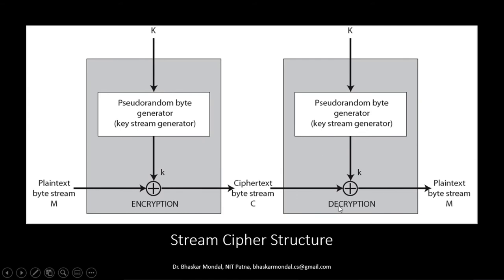On the receiver side, the decryption algorithm is equally simple. The recipient has the same pseudo-random byte generator with the same K, which generates the key stream. The cipher text comes in one byte at a time, and K gives one byte at a time; they are XOR'd bitwise and you get back the plain text byte stream. This is how the simplest stream cipher works.